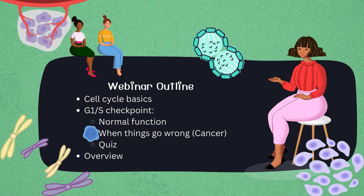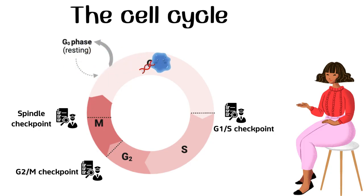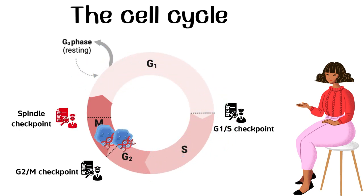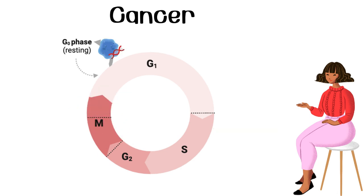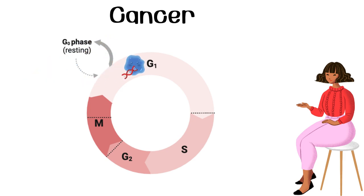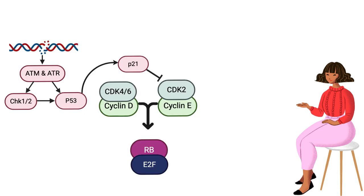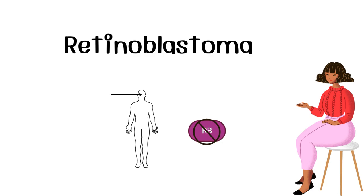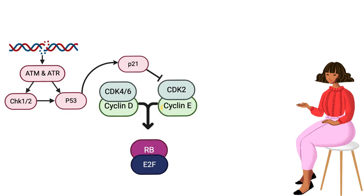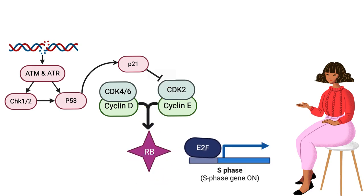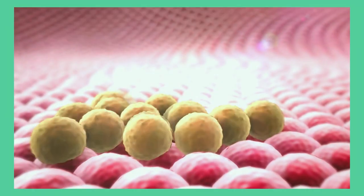When mutations occur in G1/S checkpoint proteins, DNA damage may not be detected, allowing damaged cells to continue through the cell cycle, possibly leading to cancer. Cancer cells often do not need external growth stimuli to trigger entry into the G1 phase. Cancer cells sometimes have mutations in RB leading to retinoblastoma, a childhood cancer in the eye. When RB is mutated, it can no longer bind to E2F, allowing E2F to always be free to transcribe S phase genes uncontrollably, leading to cancer.